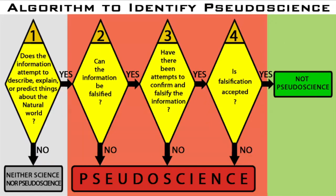If the answer to this third question is no — if there have been no attempts to both confirm and falsify or disprove the information — then the information is pseudoscience. If the answer to this third question is yes, if attempts have been made to both confirm and falsify the information, then proceed to the last question.